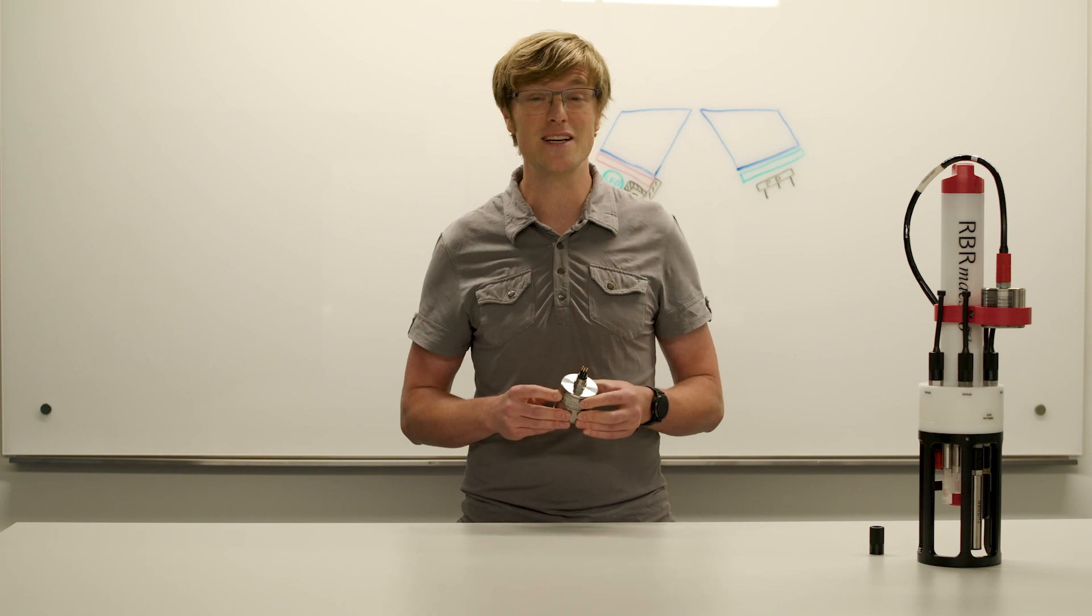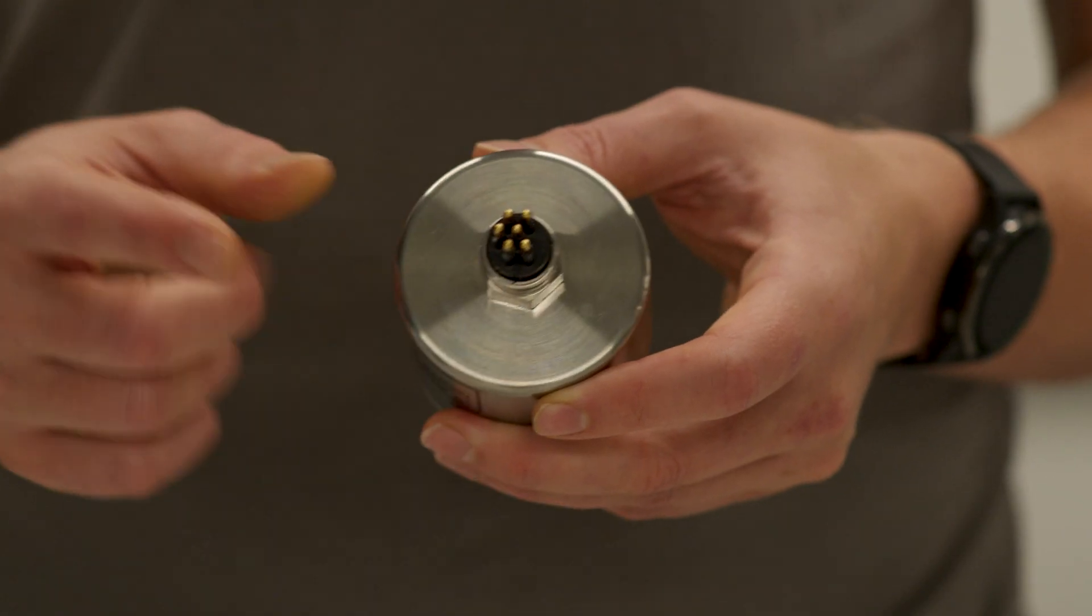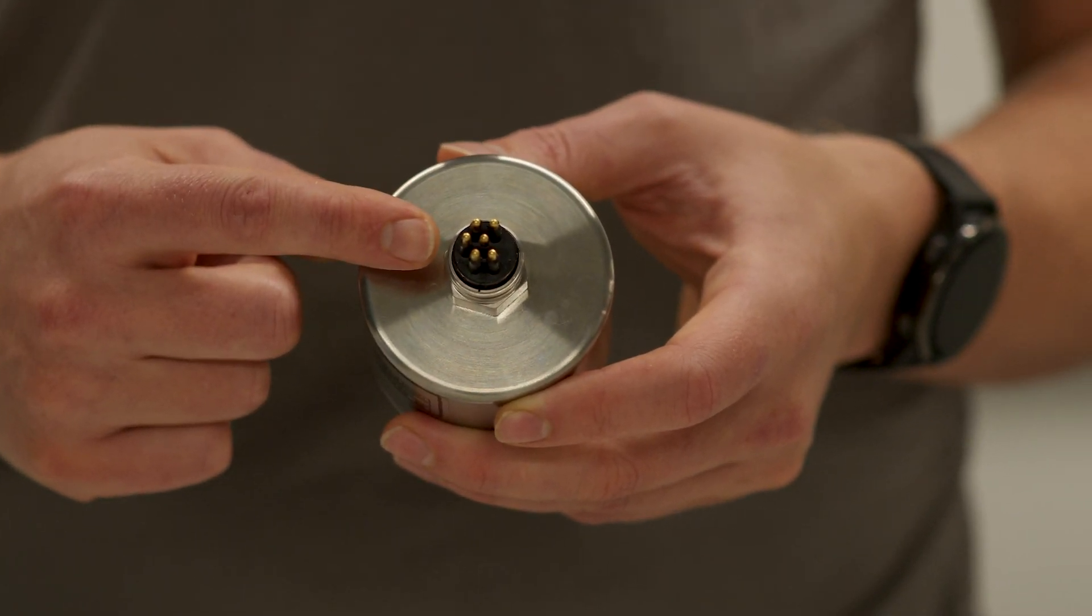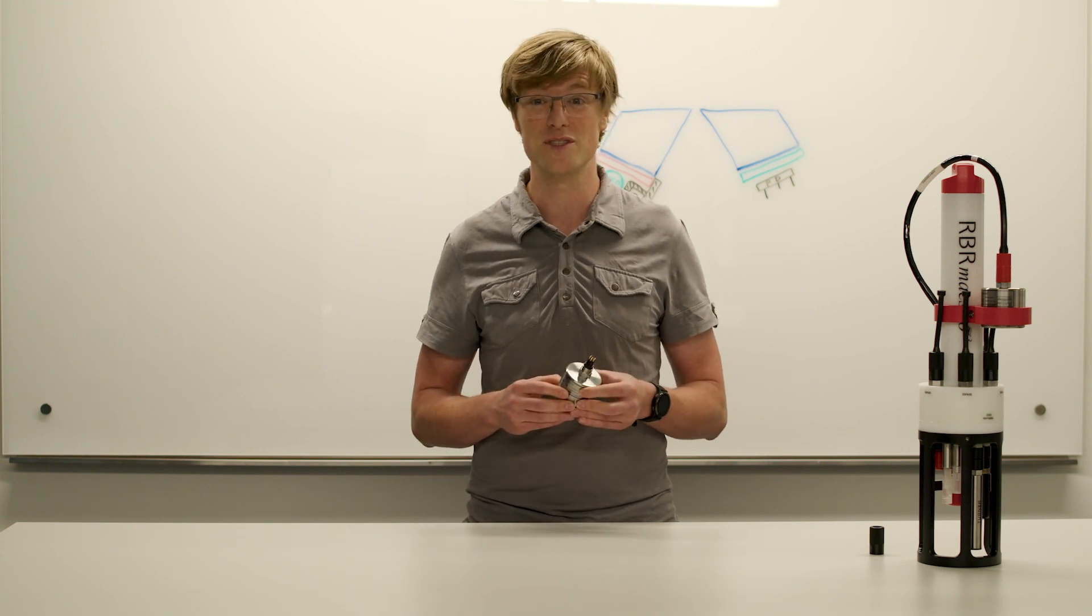The sensor streams calibrated data via RS232 through the 6-pin MCBH connector and can accept a wide range of voltages from 4.5 to 30 volts.